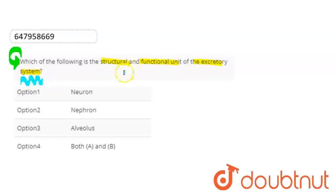So here we have to tell from the given options which is the structural and functional unit of the excretory system, right? So let's start with the first option.